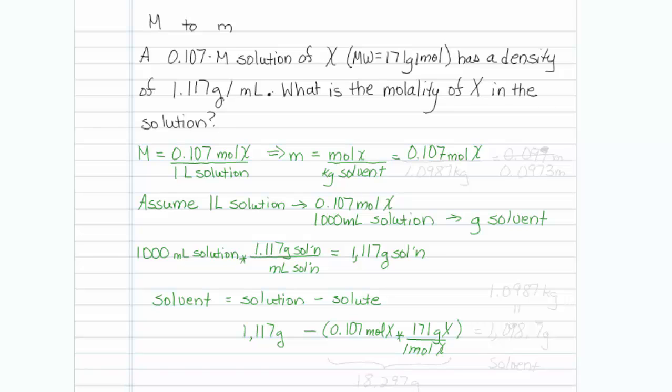Just multiplying this portion out gives us 18.297 grams. So when we subtract, we wind up with 1,098.7 grams. And now we have just the mass of the solvent.